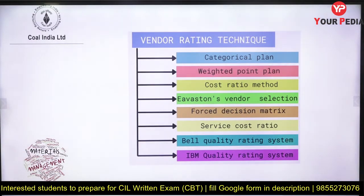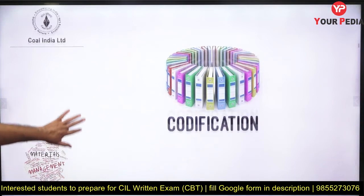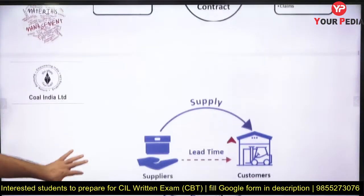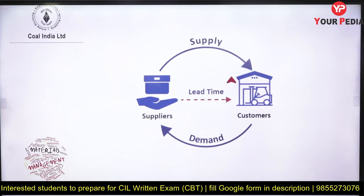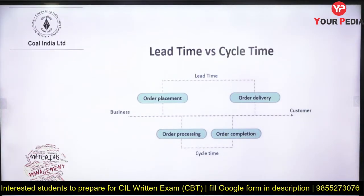Vendor and supplier management is another important domain — how to rate vendors and suppliers, what techniques are used, and how to manage them. Codification is a very important topic with many questions: what is codification and how to do it. General conditions of contract — what we mean by contract and agreement, what conditions are involved — questions have been asked. Lead time is heavily tested: what is lead time, how it compares with cycle time, and the relationship between them.